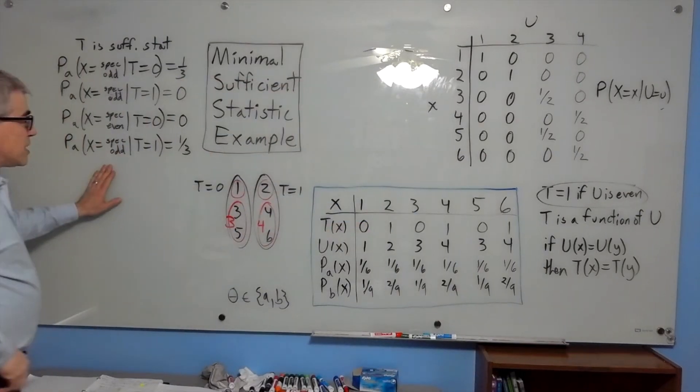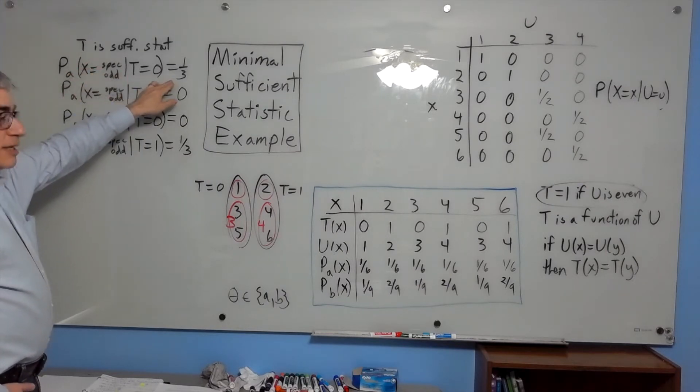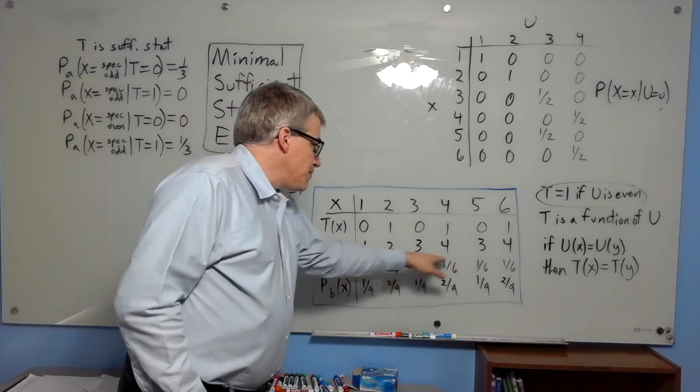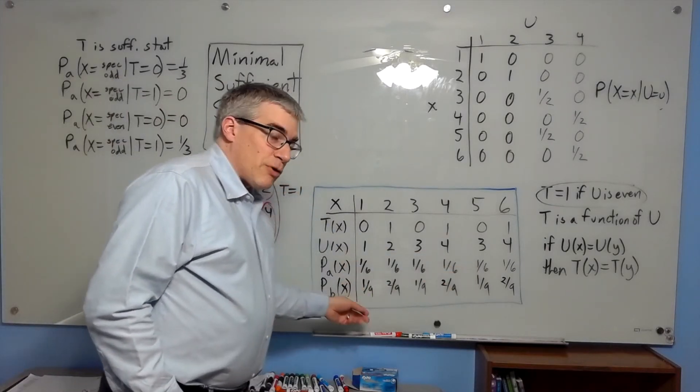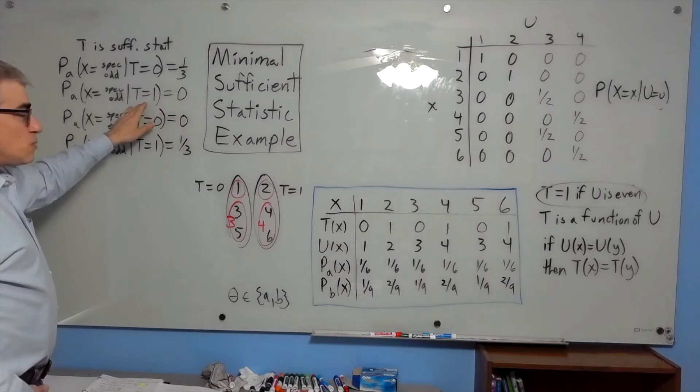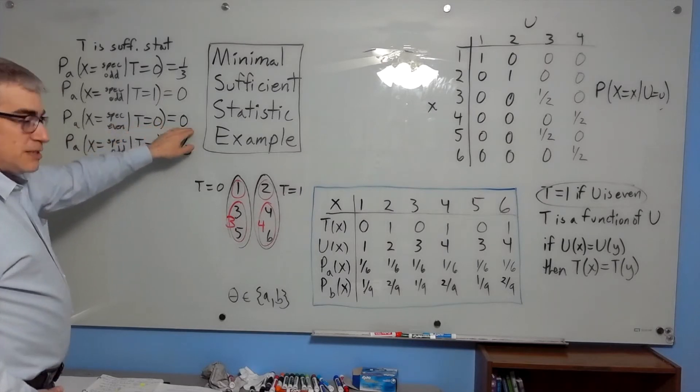And that's what we're going to show here, is that it doesn't matter whether we consider the first or the second possibility, we're going to get the same conditional probabilities for x given t. Now, for t, I could boil it down to four cases. The probability that x is a specific odd number when t equals 0 is one-third, because all the odd numbers are equally likely. And that's true in either one. The probability that x is a specific odd number given that t equals 1 is 0, because t equals 1 means it's even.